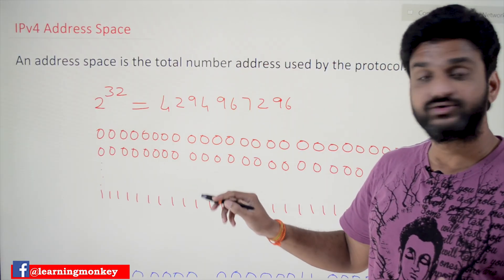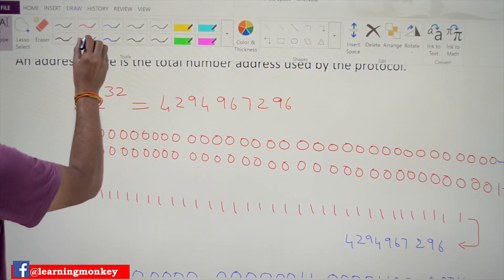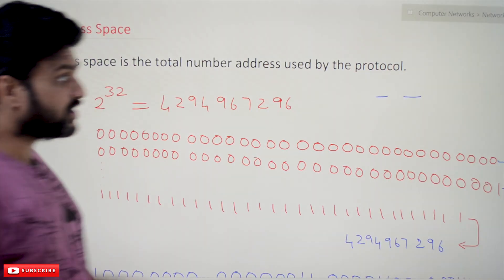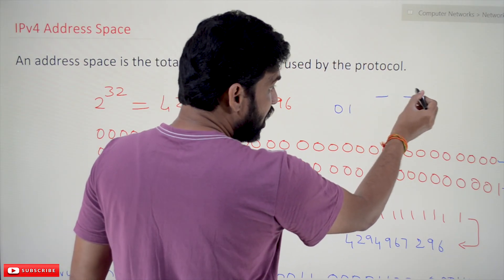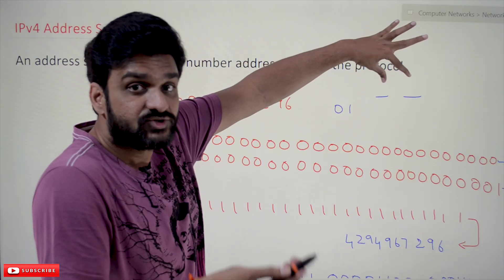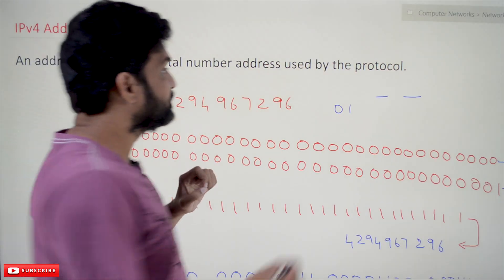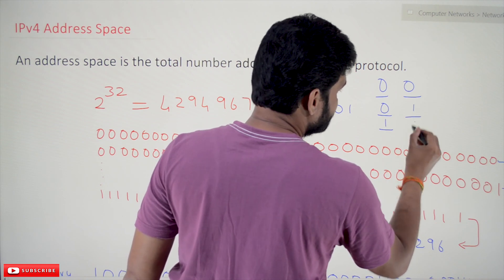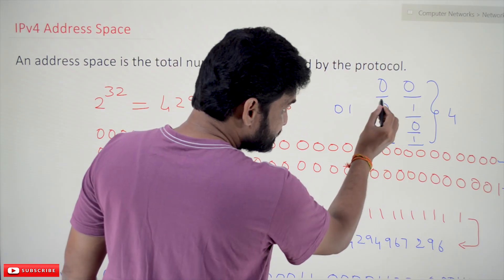Let's understand this simply using an example from digital number systems. For example, if you have two bits, how many unique combinations are possible? With two bits we only have zeros and ones. So the possible combinations are: 0-0, 0-1, 1-0, and 1-1.